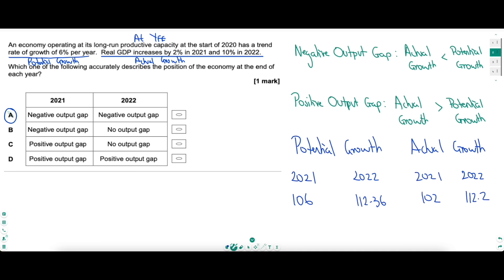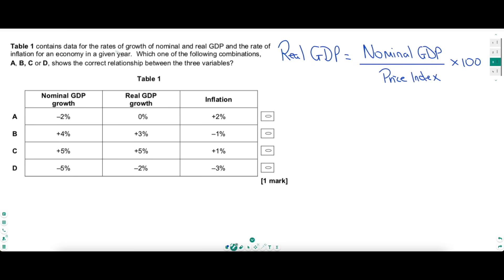Index numbers are so helpful, and you'll see that even for this next question. We now have a table containing rates of growth of nominal and real GDP, as well as the rate of inflation in a given year. The question asks which combination correctly describes the relationship between the three variables. The equation we need is the real GDP equation: real GDP equals nominal GDP divided by a price index, multiplied by 100. We've got percentage changes, so index numbers come in handy. Whatever the year was before, call that the base year — everything was 100 — and work from there using the equation.